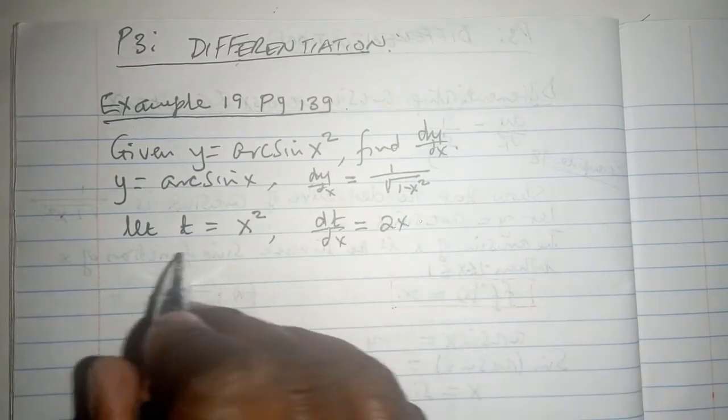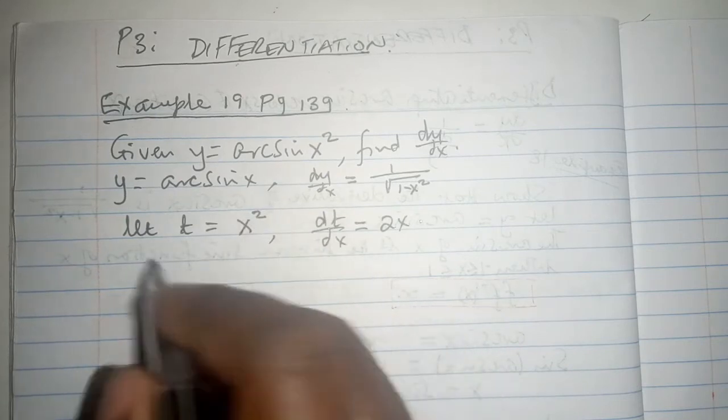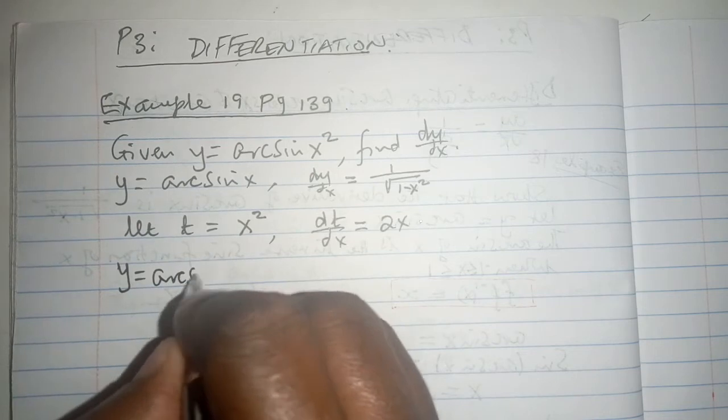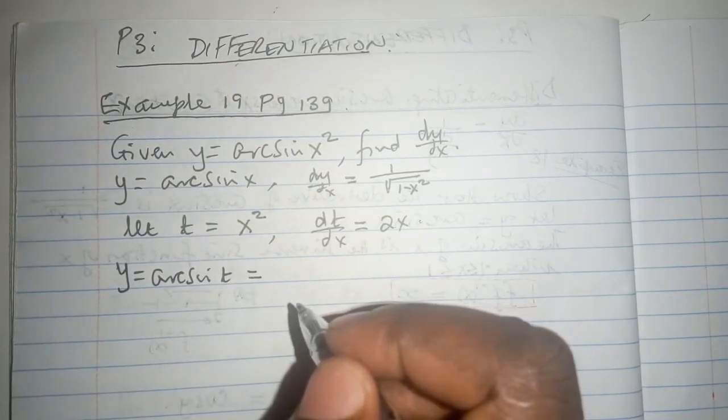And the whole of this function, when we have t equals x squared, then y becomes arc sine t.